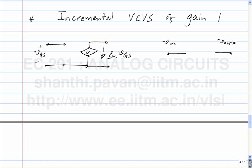The most obvious suggestion: just connect Vin to Vout. It is a valid thought, so let us figure out what is wrong with it. For a voltage controlled voltage source, the input impedance must be infinity. But if I connect the load resistance to Vout, the input gets loaded by the same resistance. So clearly connecting the input directly to the output is not a good idea.